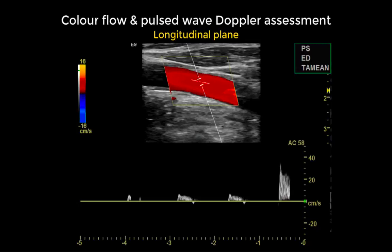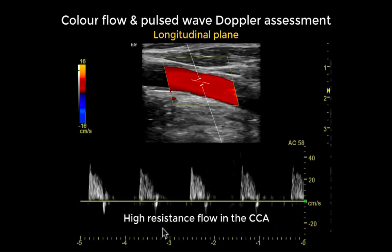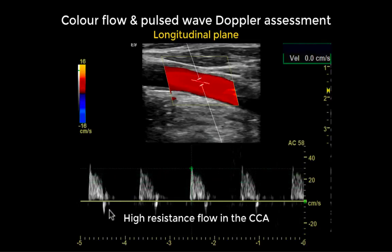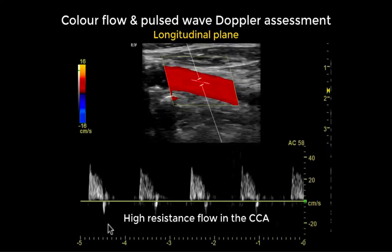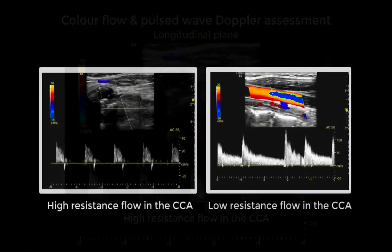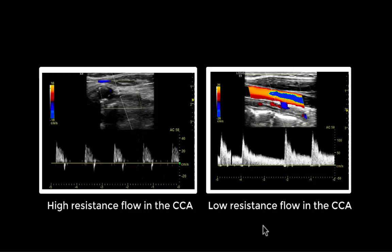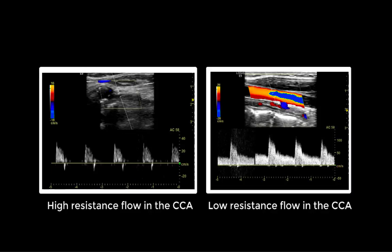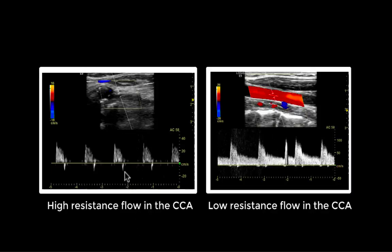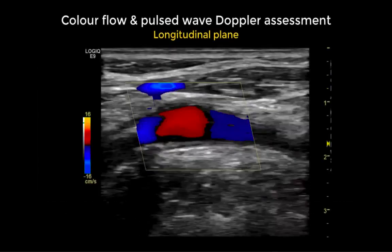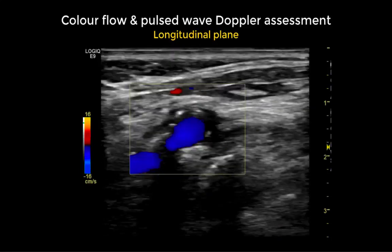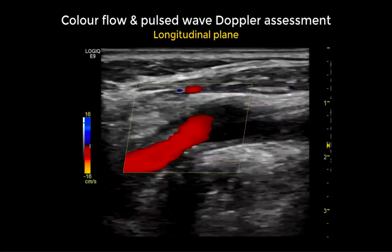With pulse wave Doppler we obtain a waveform which is quite unusual for a common carotid artery. This waveform has high resistance with no diastolic flow pattern, showing a small reversal flow in delayed systole. The normal common carotid waveform is low resistance with well-represented diastolic flow; the absence of diastolic flow is indicative of distal high resistance likely caused by obstructive disease.